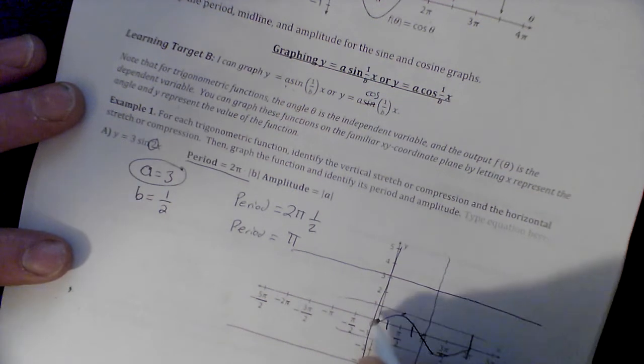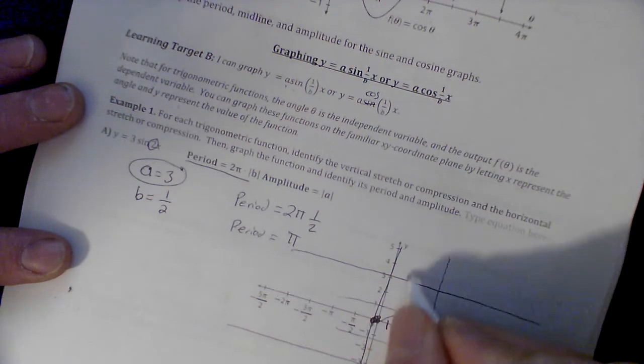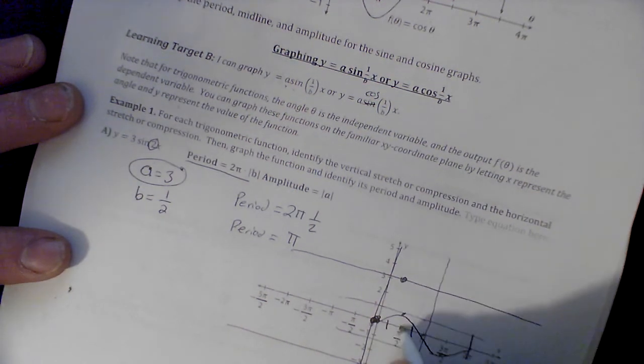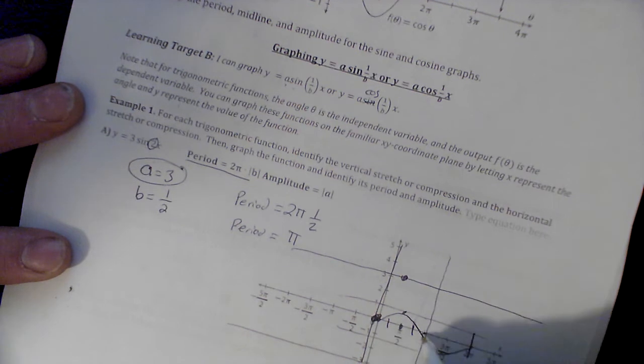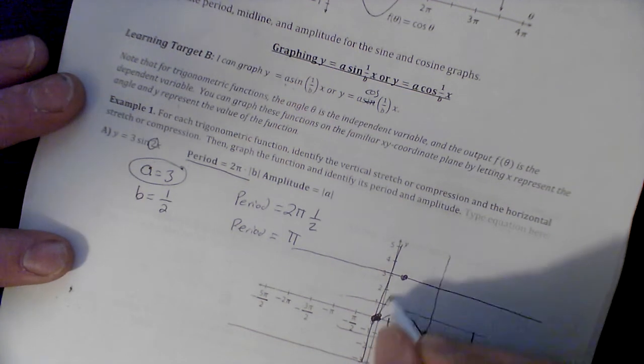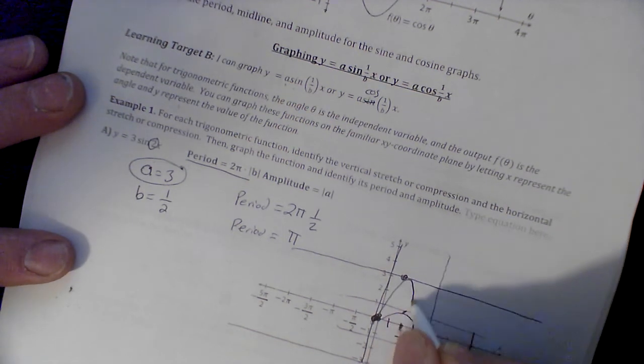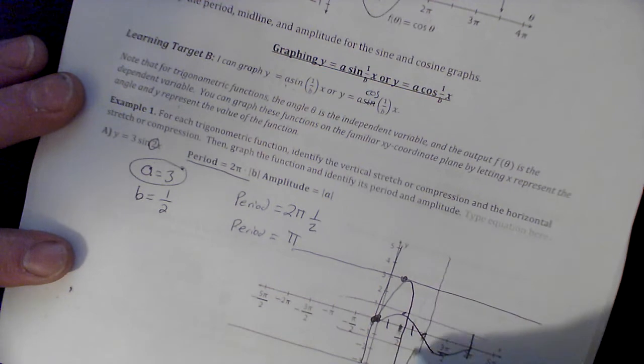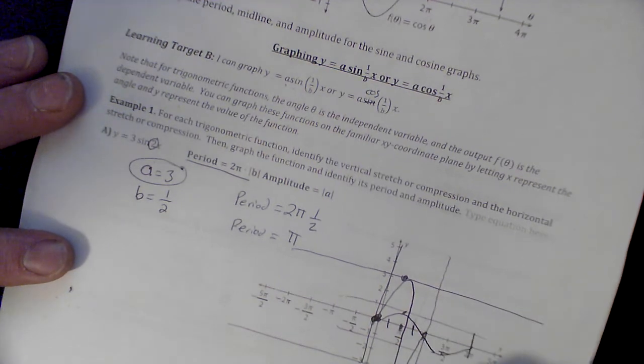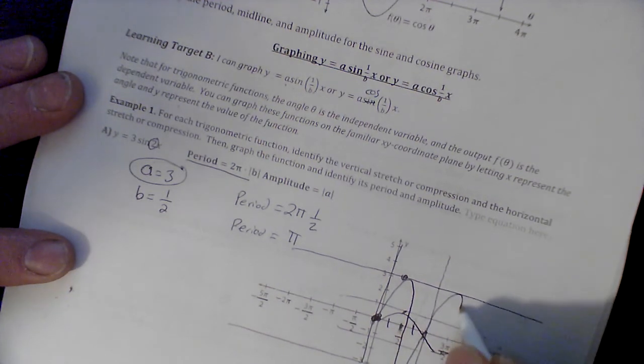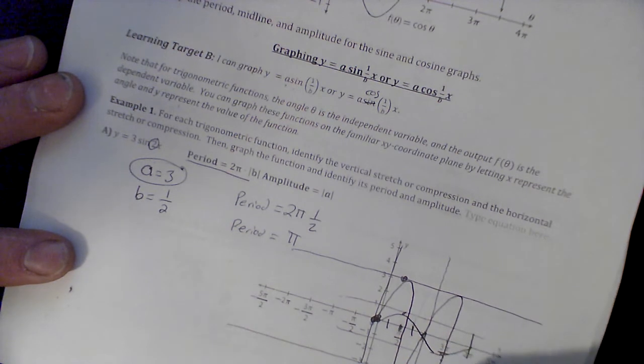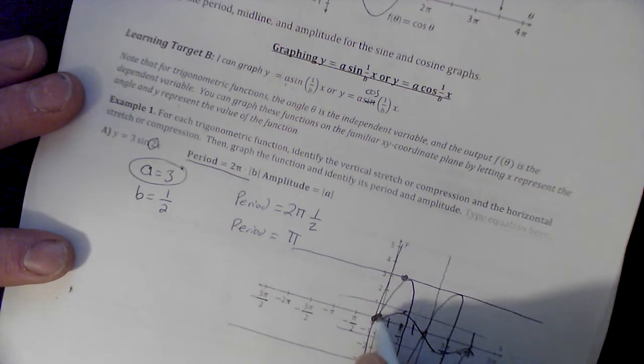Other than that, it still starts in the middle, goes up to the top, comes back down to the middle, goes to the bottom, and goes back to the middle. So we have a graph that looks like this. Honestly, that graph would continue in both directions.